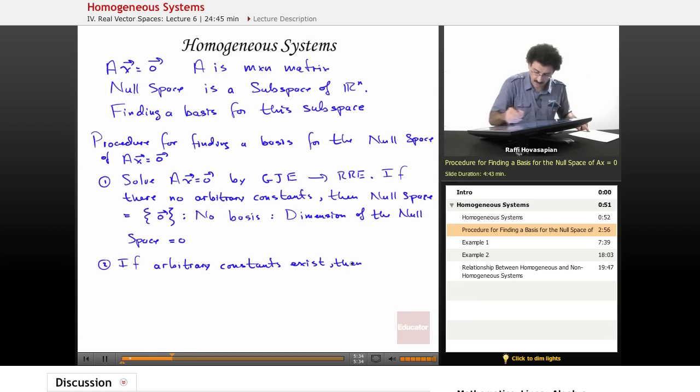So if arbitrary constants exist, then write the solution x equals c1 x1 plus c2 x2 plus dot dot ck xk, however many of these vectors and constants there are.